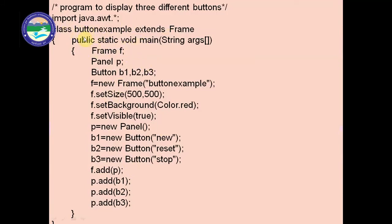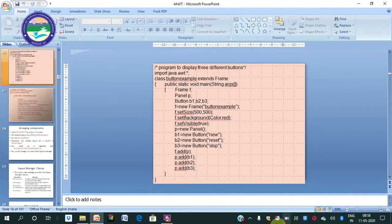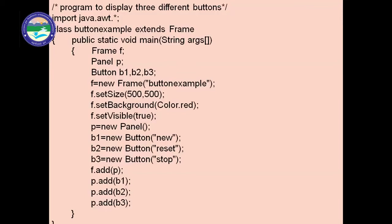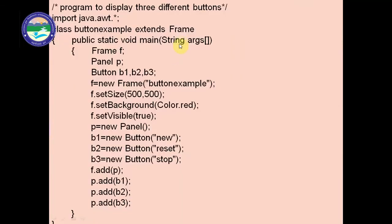Now here is another program. In this program we are not importing the applet package — only import java.awt.* is needed. We have class ButtonExample extends Frame. With the help of the Frame class, the AWT components will be placed inside the frame container. In the previous program we extended Applet; here we are using Frame. So we can store elements on applet as well as on frame.